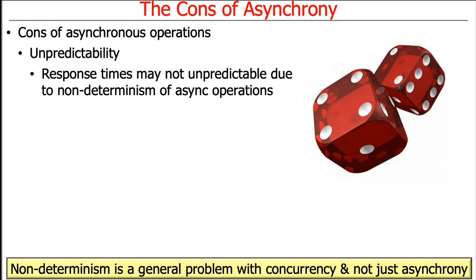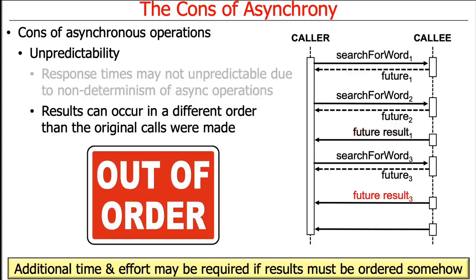Keep in mind this is a general problem with concurrency, not just asynchrony or CompletableFutures. With synchronous blocking calls, results come back in the order you invoked them — which underutilizes parallelism but is at least ordered. With asynchrony, things run faster typically, but the order of results may differ. So if you need ordering, you'll have to figure out how to reorder results yourself.